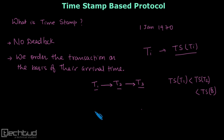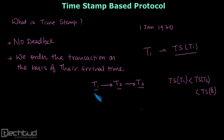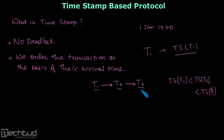Whatever schedule we create using the operations of transactions T1, T2, T3 must be conflict equivalent to the serial schedule T1 followed by T2 followed by T3.